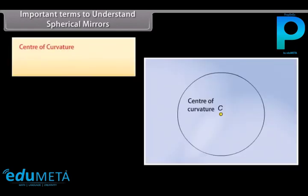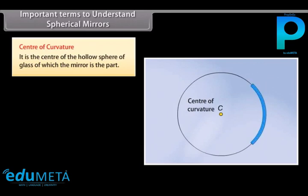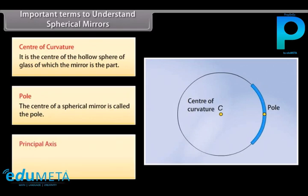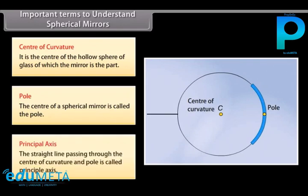Important terms to understand spherical mirrors. Center of curvature: it is the center of the hollow sphere of glass of which the mirror is a part. Pole: the center of a spherical mirror is called the pole. Principal axis: the straight line passing through the center of curvature and the pole is called the principal axis.